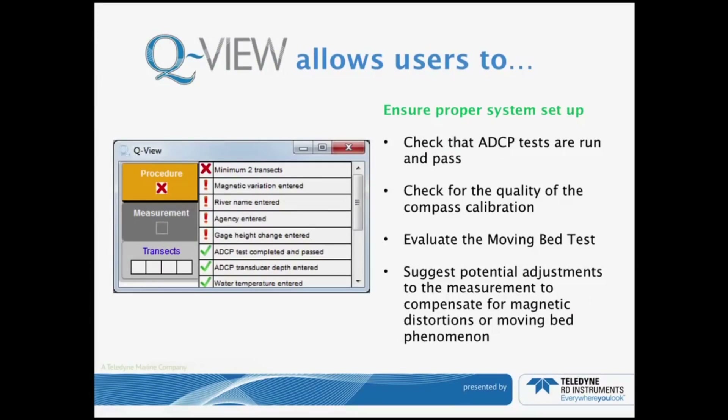Right here you're looking at the procedure step. It's checking that the ADCP tests were run and passed. It's checking to make sure that not only did you do the compass calibration, but that the results of that compass calibration were within the parameters established in the rules. It evaluates the moving bed test — it will tell you if you have one and what the correction factor may be. It also suggests potential adjustments for magnetic distortions or moving bed phenomena.